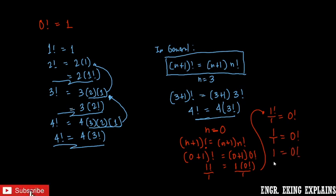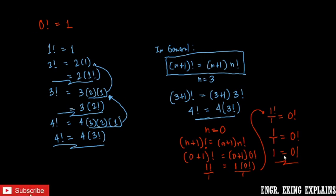Therefore, 0 factorial is just equal to 1. We have proven that 0 factorial — right here with the exclamation point — is equal to 1. I hope you understand something in this video and have fun studying.